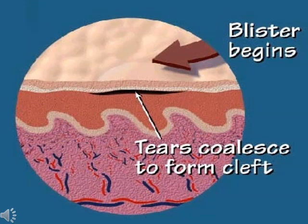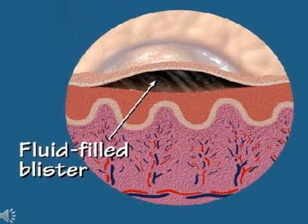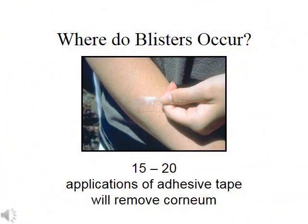The microscopic tears coalesce and form a cleft. The stratum corneum and the stratum granulosum become the roof of the blister. The cleft will fill with a clear serous fluid, not unlike plasma, although it differs by a few enzymes. Blisters do not occur all over the body; they occur where the epidermis — more specifically the stratum corneum and granulosum — are thick and strong enough to support the formation of a continuous blister roof. On some parts of the body the epidermis is very thin, and repeatedly tearing off adhesive tape will allow you to remove the epidermis in very thin-skinned areas.